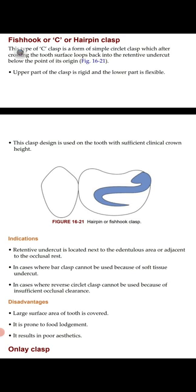Indications for the fish hook/hairpin clasp: the retentive undercut is located next to the edentulous area or adjacent to the occlusal rest; in cases where the bar clasp cannot be used due to soft tissue undercut; and where the reverse circulate clasp cannot be used due to insufficient occlusal clearance. Disadvantages: large surface area of tooth is covered, it is prone to food lodgement, and it results in poor aesthetics.